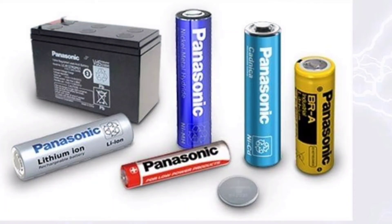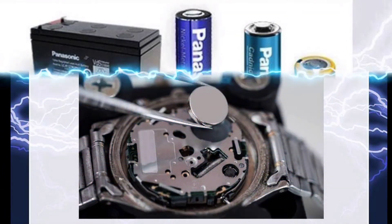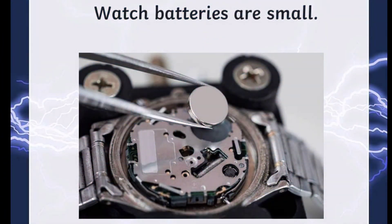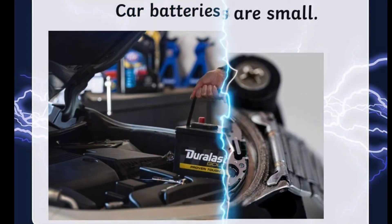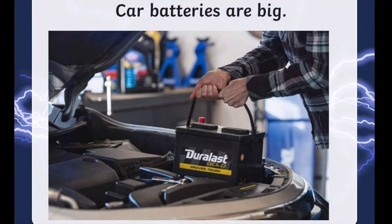Batteries come in different shapes and sizes. Watch batteries are small, and car batteries are big.